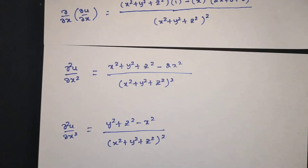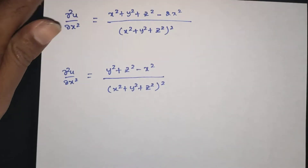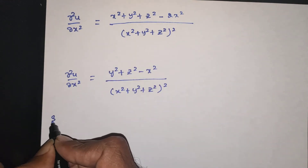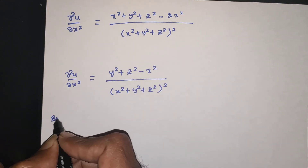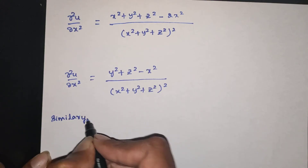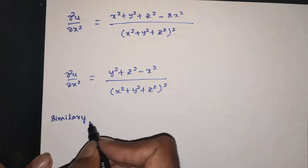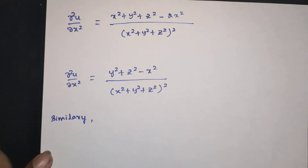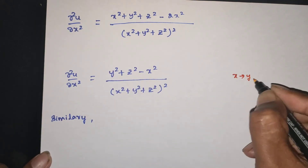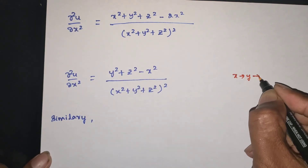Now we need ∂²u/∂y² and ∂²u/∂z². Since u is a symmetric function, we can use the symmetry property. Similarly, since u is symmetric, we can obtain the results by cyclic substitution.